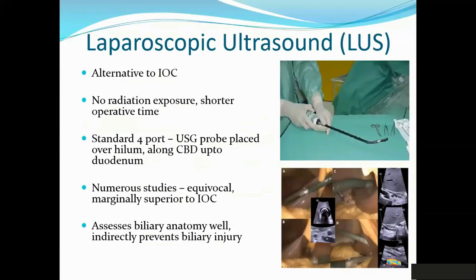Laparoscopic ultrasound came as an alternative to IOC and picked up pace quickly, simply because there's no radiation exposure. It's less cumbersome and easier to do in the operating room without requiring much space. If the surgeon knows how to perform and read the ultrasound, the operating time is significantly less compared to IOC. It uses the standard ports — the four ports — with the ultrasound probe placed on the hilum and massaged down the common bile duct all the way to the duodenum.